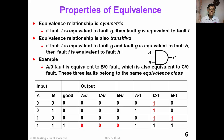The equivalence relationship is symmetric: if fault F is equivalent to fault G, then fault G is equivalent to fault F. The relationship is also transitive: if fault F is equivalent to fault G, and fault G is equivalent to fault H, then fault F is equivalent to fault H. For this AND gate example, A stuck-at-0, B stuck-at-0, and C stuck-at-0 all belong to the same equivalent fault class.